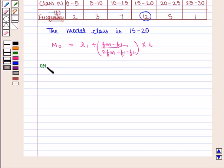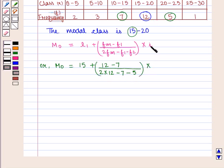So we have mode M0 is equal to L1, that is the lower limit of the modal class which is equal to 15, plus Fm, that is the frequency of the modal class which is equal to 12, minus F1, that is the frequency of the class preceding the modal class which is equal to 7, upon twice of Fm, that is 2 into 12, minus F1, that is 7, minus F2, that is the frequency of the class succeeding the modal class and is given by 5, into I, that is the width of the class interval which is given by 20 minus 15, that is 5.